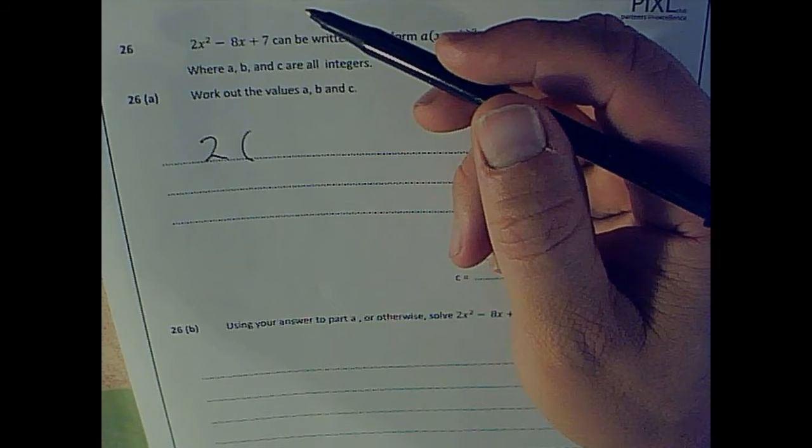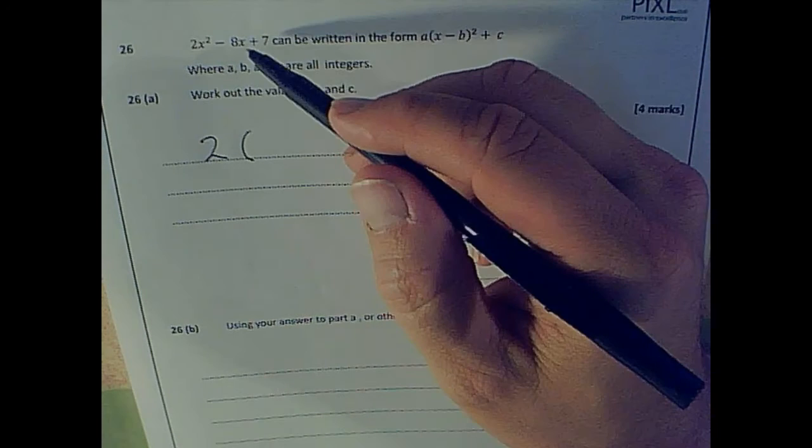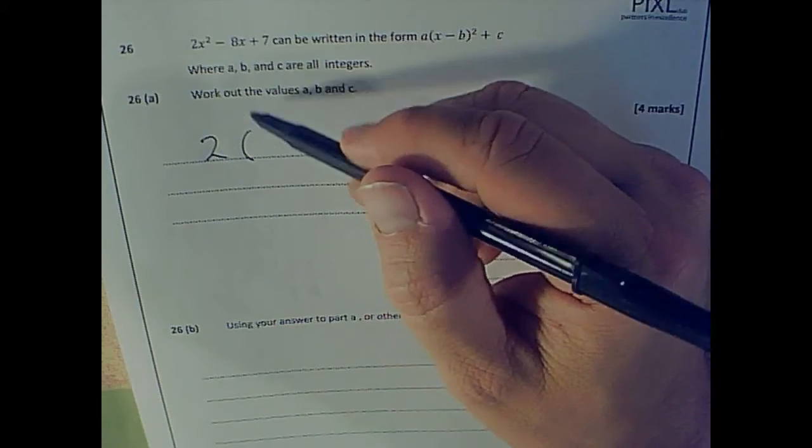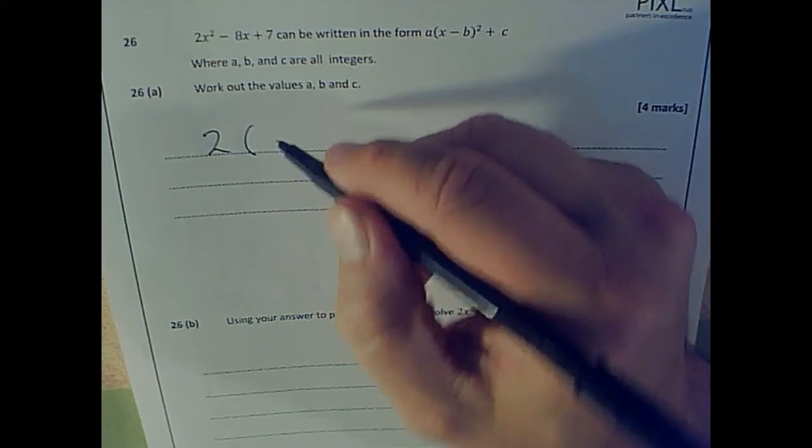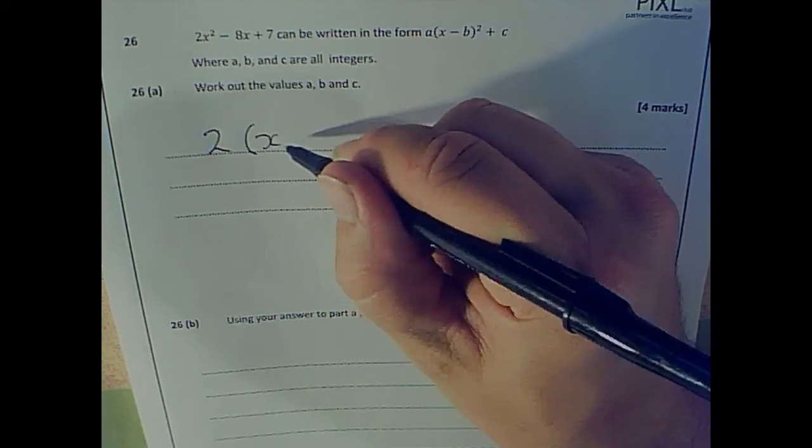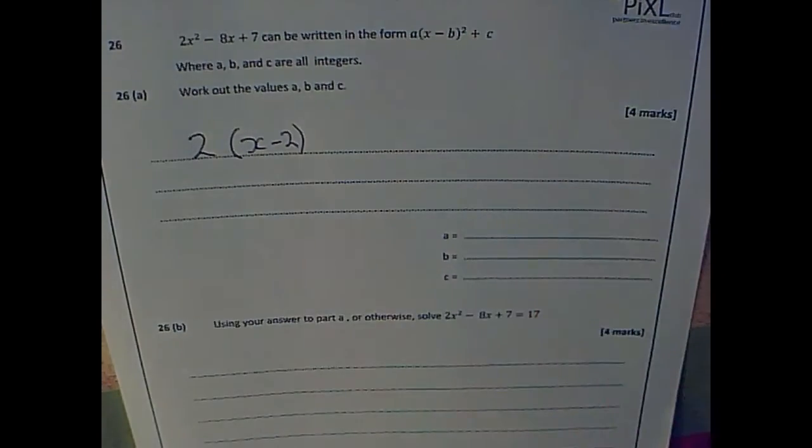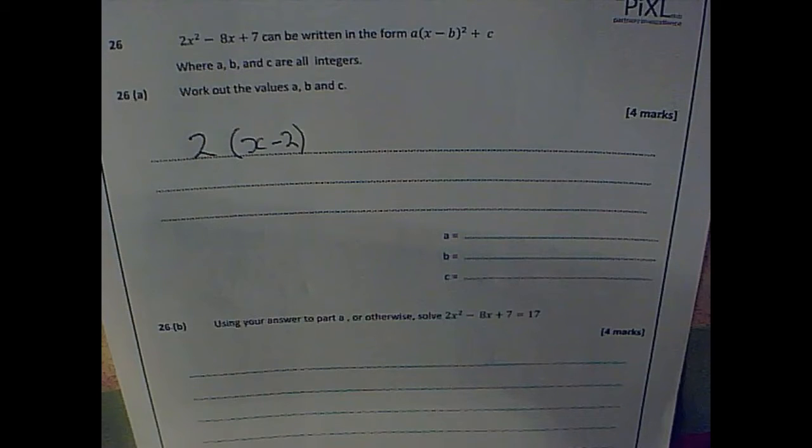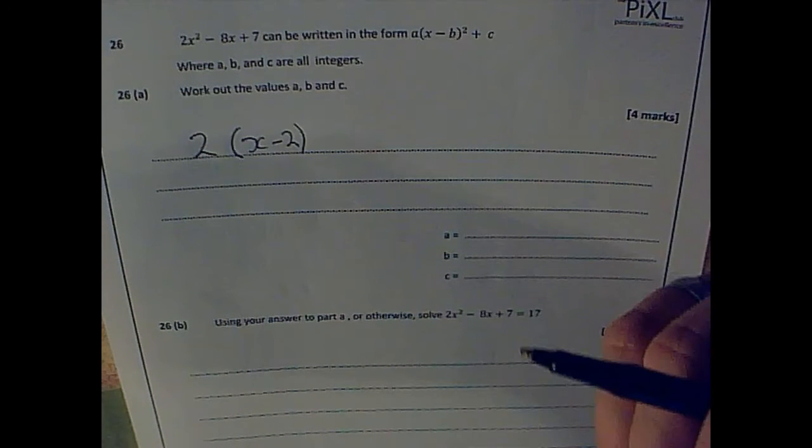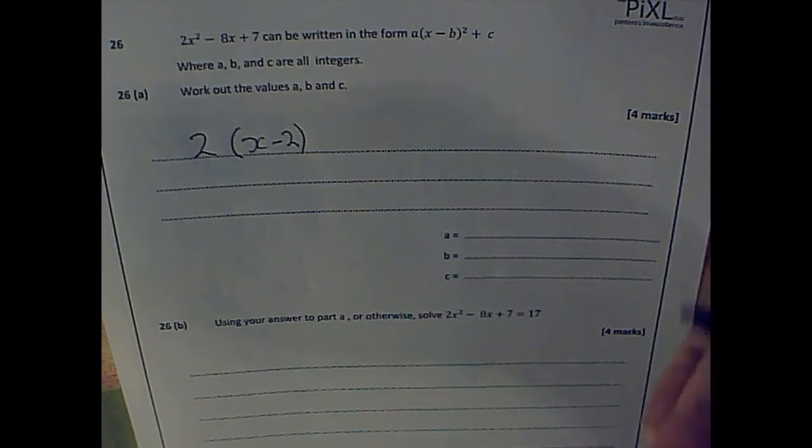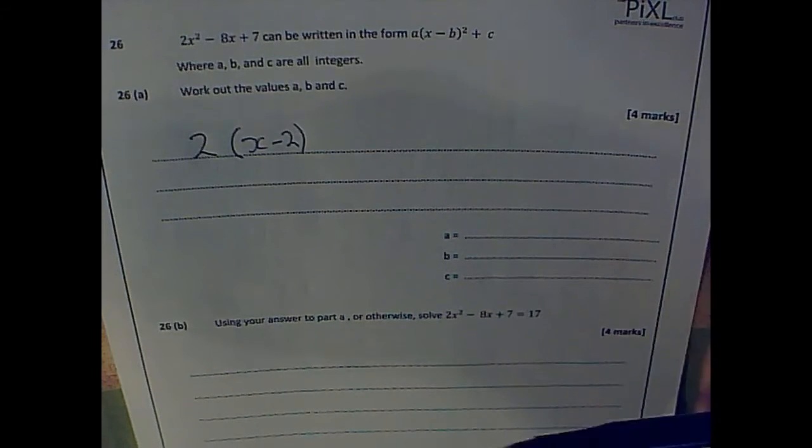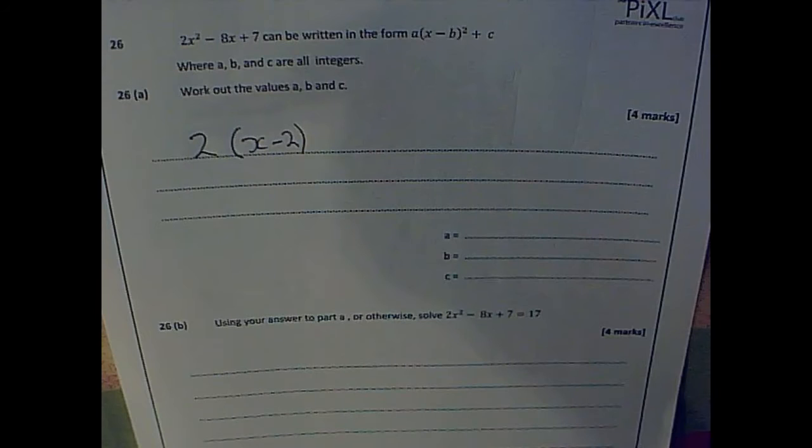But once I times that all by 2, I'll end up with minus 16x. So instead, it's got to be x minus 2. If this is all very tricky to you, the skill is in completing the square. You can go through the Hegarty Maths work on it, really step by step, taking it up to this level of difficulty with completing the square.